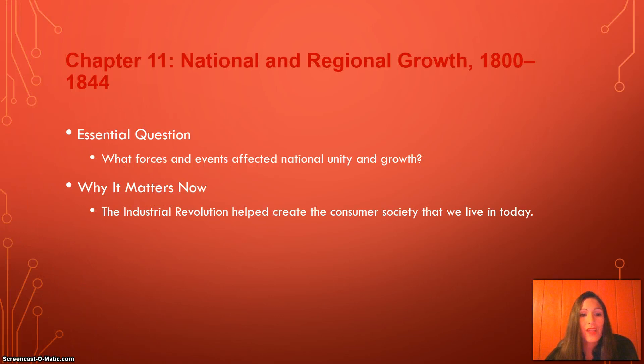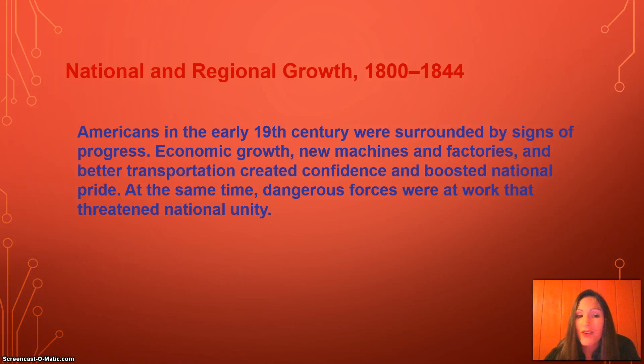Looking at chapter 11 as a whole, our essential question is: what forces and events affected national unity and growth? Why it matters now — the Industrial Revolution helped create the consumer society that we live in today. Americans in the early 19th century were surrounded by signs of progress: economic growth, new machines and factories, and better transportation created confidence and boosted national pride. At the same time, dangerous forces were at work that threatened national unity.